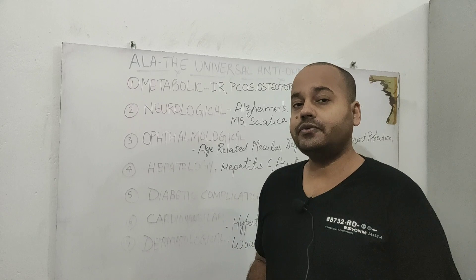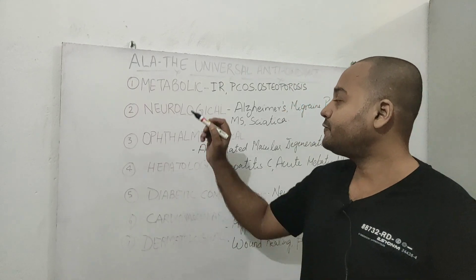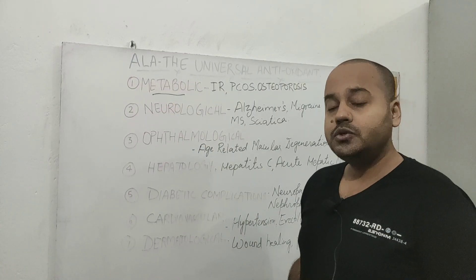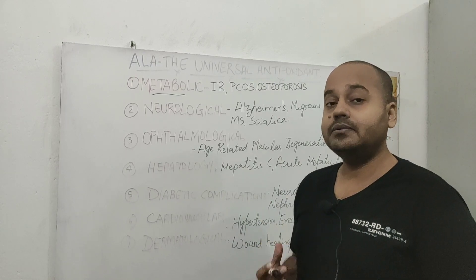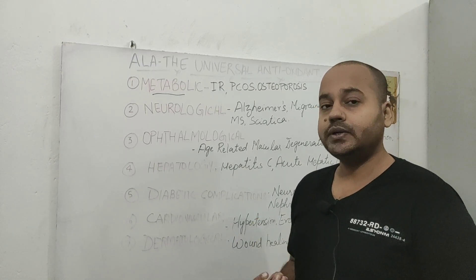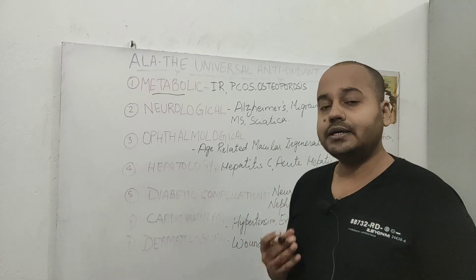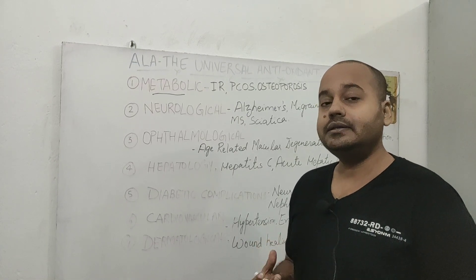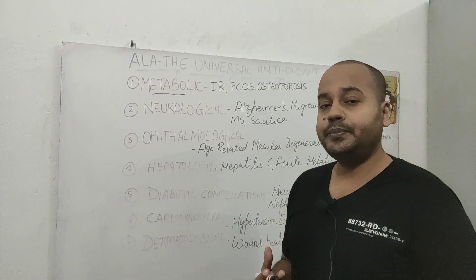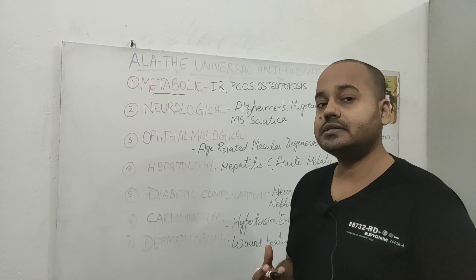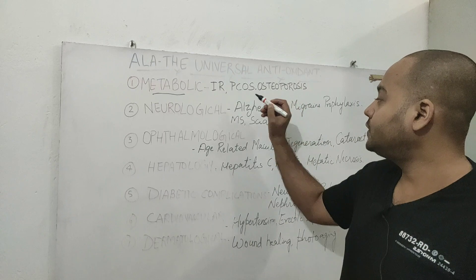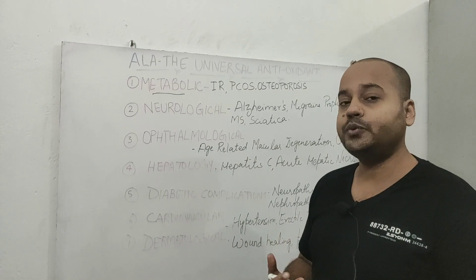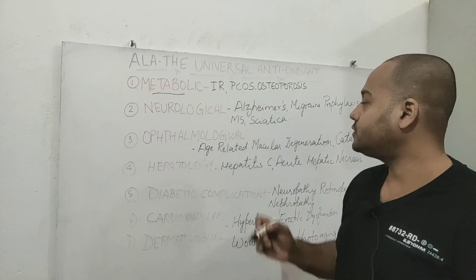The first important benefit of alpha lipoic acid is metabolic. It is known to improve insulin sensitivity, which helps you lose visceral fat — especially belly fat — and achieve better lipid control by lowering triglycerides. It is also very useful in polycystic ovarian syndrome, helping to decrease high androgens and improve fertility.